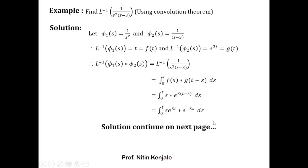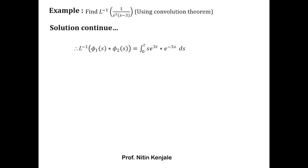Carrying forward, the inverse Laplace transform of φ1(s)·φ2(s) equals the integral from 0 to t of s·e^(3t)·e^(−3s) ds. Since the integration is with respect to s, e^(3t) is a constant and can be taken outside the integral, leaving e^(3t) times the integral from 0 to t of s·e^(−3s) ds.